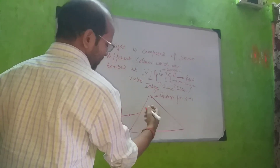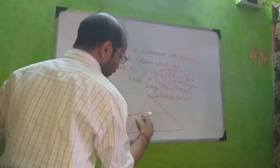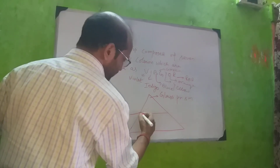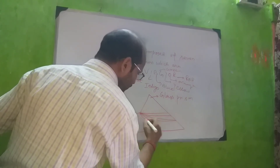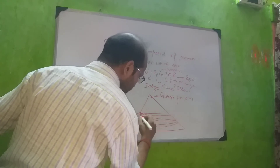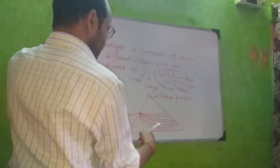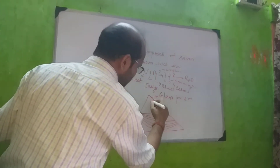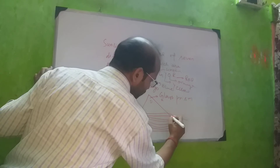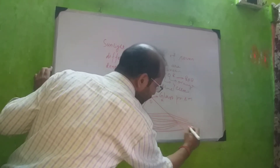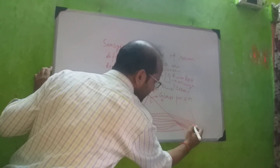Since the light is passing from a rarer to a denser medium, instead of going straight it will bend. This white light will get divided into seven different colors — one, two, three, four, five, six, seven. Now the light is passing from denser to rarer medium, so it will bend much more — one, two, three, four, five, six, seven.